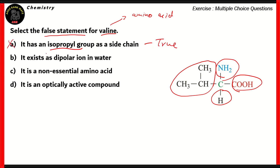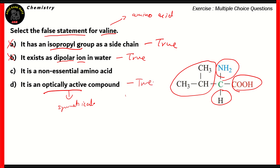What about option B? It says valine exists as a dipolar ion in water. This is also a true statement with respect to most amino acids, because they have both an amine group and a carboxylic group, exhibiting opposite charges — that's why it exists as a dipolar ion. So option B is also incorrect as the answer. What about option D? It says valine is an optically active compound. Optically active means it's not symmetrical, and light passing through it undergoes changes. Since valine has a large isopropyl chain, it is an optically active compound. So option D is also a true statement, making it incorrect.